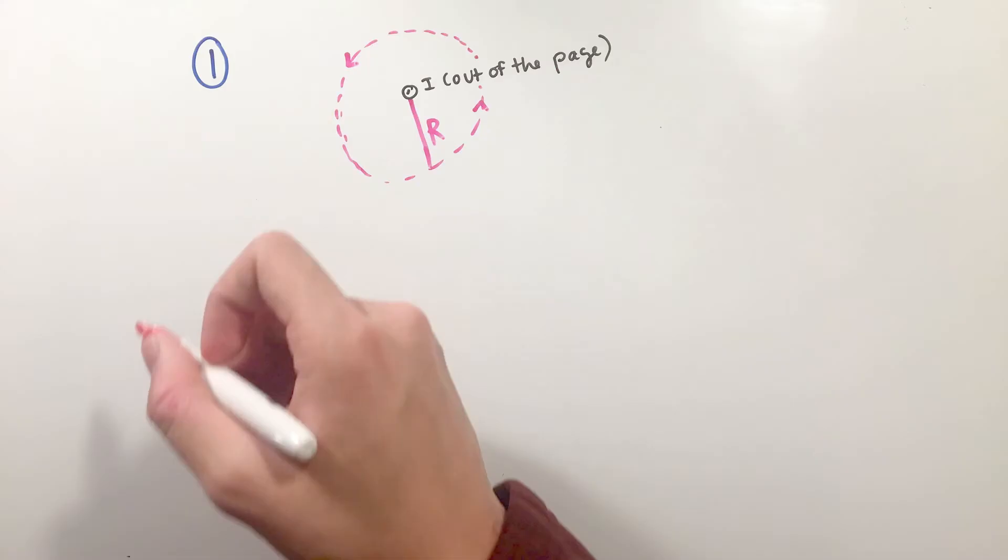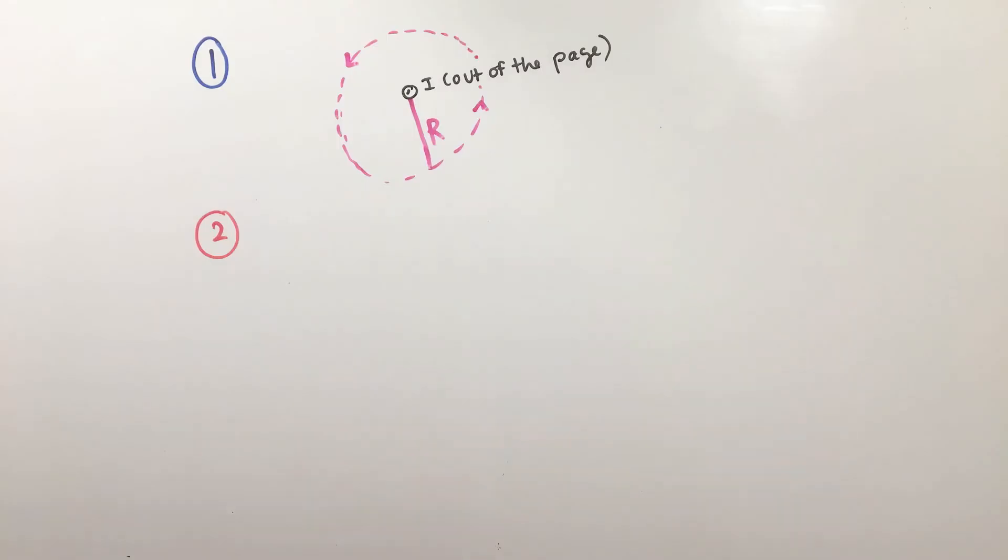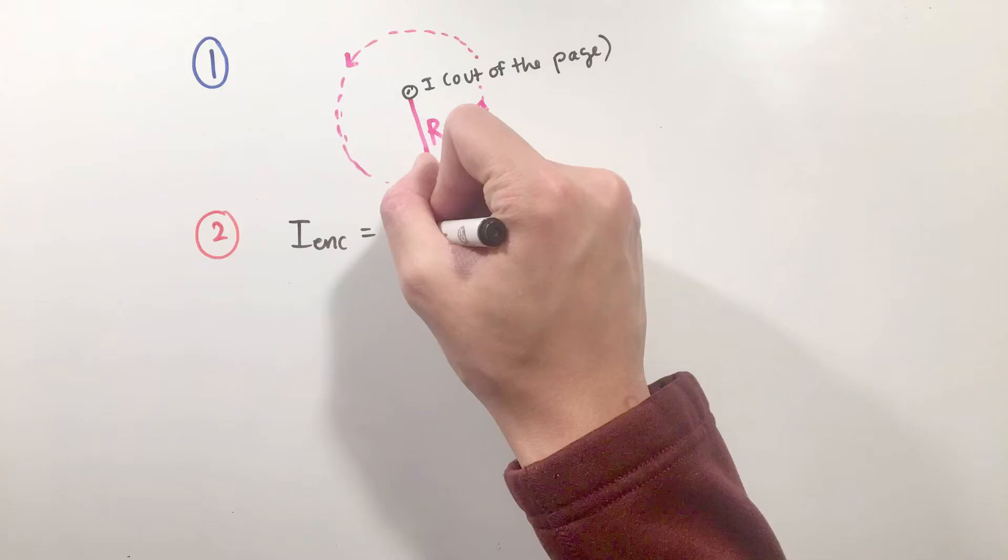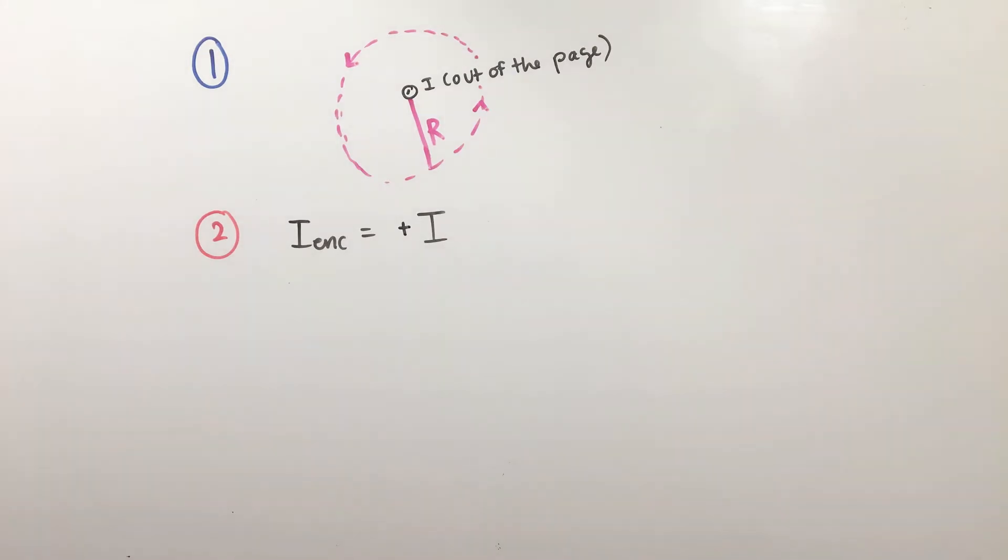For step two, the current enclosed is simply I, but let's see what sign it has according to our loop direction. Curling our right hand around, our thumb points towards us, or out of the page, in the same direction as the wire's current. For this reason, the current enclosed is positive I.